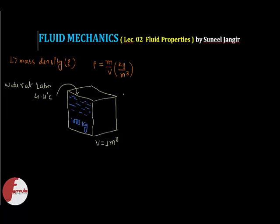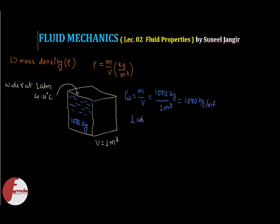If I want to define the density of water at this state, density equals mass per unit volume — mass is 1000 kg and volume is one meter cube — so density equals 1000 kg per meter cube. This state is very specified because at 1 atmospheric pressure and 4.4 degree centigrade, the density of water is maximum, that is 1000 kg per meter cube.